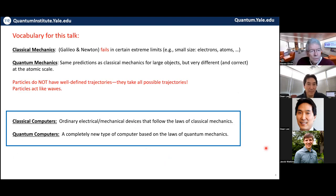So, I'll refer to classical computers as ordinary electrical or mechanical devices that follow the laws of classical mechanics. So, your cell phone and your laptop and desktop computers are classical computers. I'm going to be talking to you about quantum computers, a completely new type of device based on the laws of quantum mechanics that has completely new and unexpected powers for processing information.